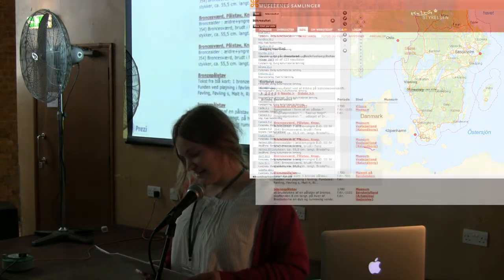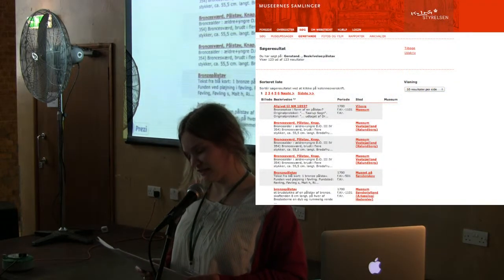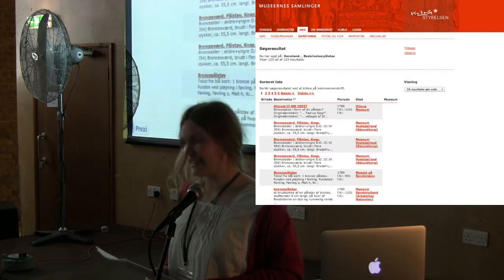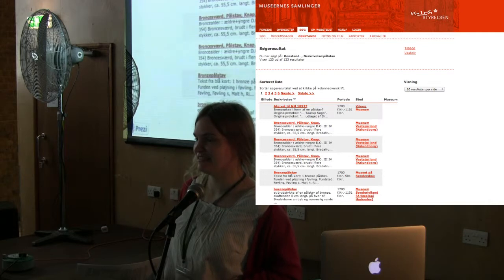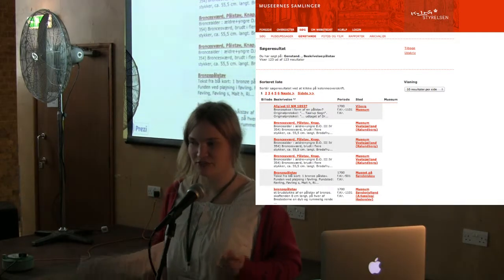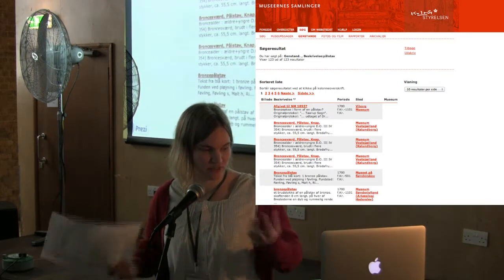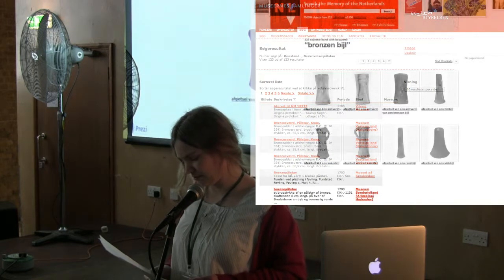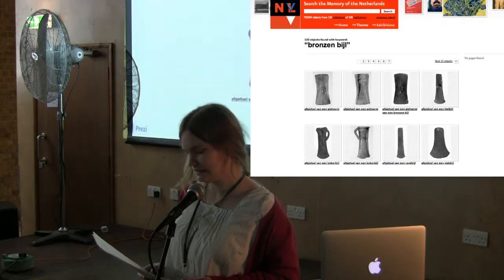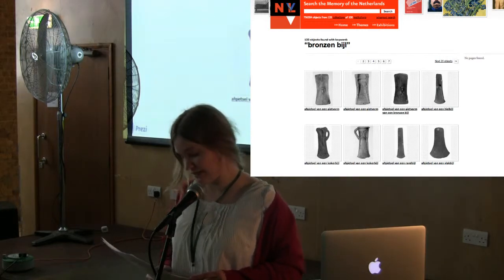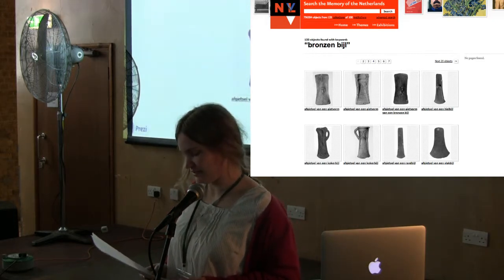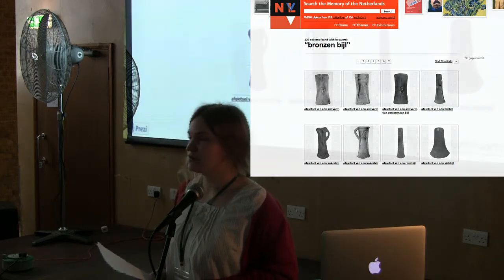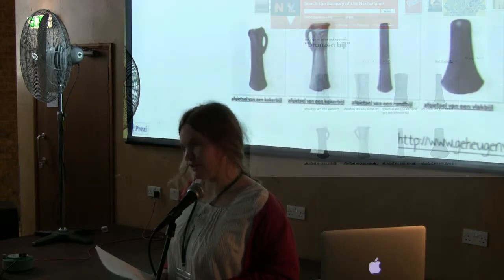Off to Denmark. Here I found 123 results — actually 114 the first time, then more on subsequent visits, so they seem to be adding data, which is cool. Then came the first sticking point: I couldn't export any data. There wasn't any map data available to see online, and I certainly couldn't export anything — not even as a CSV. Then I tried the Netherlands; in the Memory of the Netherlands database I found 113 results for 'Bronzen Bijl.' In Germany I stumbled across the fact that I couldn't actually find a collective archaeological database to search. So at that point I decided to cut my losses and stop looking for more datasets.